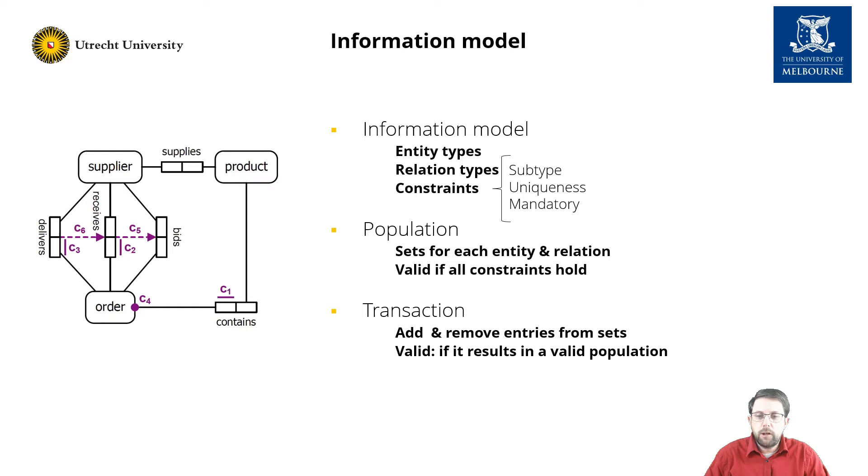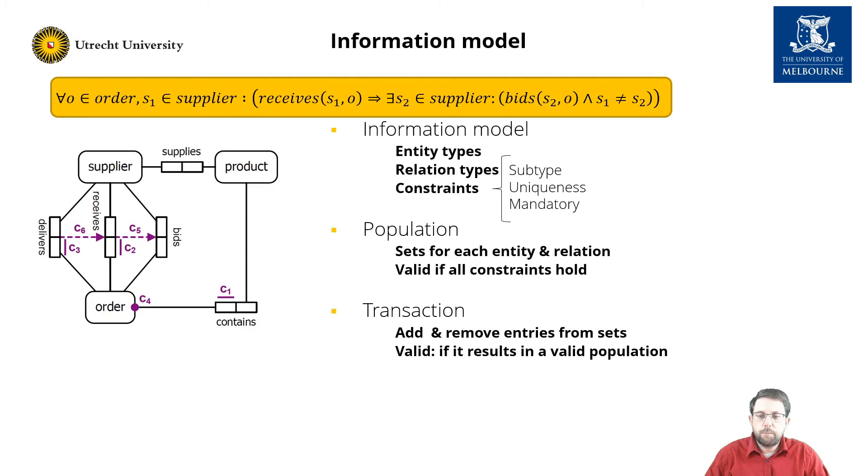In addition, we have domain constraints. For example, a supplier can only bid on products it supplies, and there are at least two suppliers that bid on a product before a supplier can receive that order, as shown by this big formula.